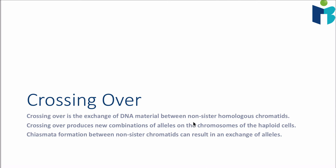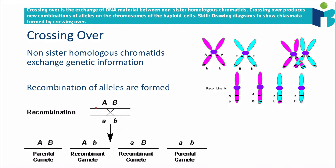In this video we're going to look at crossing over — more specifically the detailed mechanism of crossing over, which we didn't go through in SL. In SL we briefly mentioned crossing over as a process occurring in prophase I where we exchanged genetic material between chromosomes. In HL you have to describe a more detailed mechanism of how this happens and be able to draw how crossing over happens.